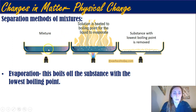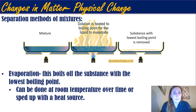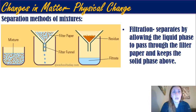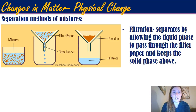Evaporation boils off the substance with the lowest boiling point — whether that's two liquids or a solid dissolved in a liquid. As the mixture heats up, the boiling point of the liquid is reached, it evaporates, and you're left with just the solid. This can happen at room temperature or be sped up with a heat source. For example, hexane mixed with water will just evaporate off, while water and salt requires a heat source to drive the water out. Filtration separates by allowing a liquid phase to pass through filter paper while keeping the solid phase, because the filter paper has very tiny holes the liquid can pass through but solids cannot.